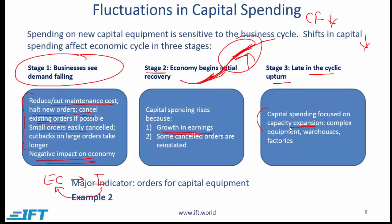As an analyst, the key indicator to determine the level of capital spending is orders for capital equipment. When these orders are going up, companies are spending or plan to spend more money on physical capital. Now do example 2 from the curriculum — question 1 requires common sense, and question 2 is straightforward based on what we've covered on this slide.